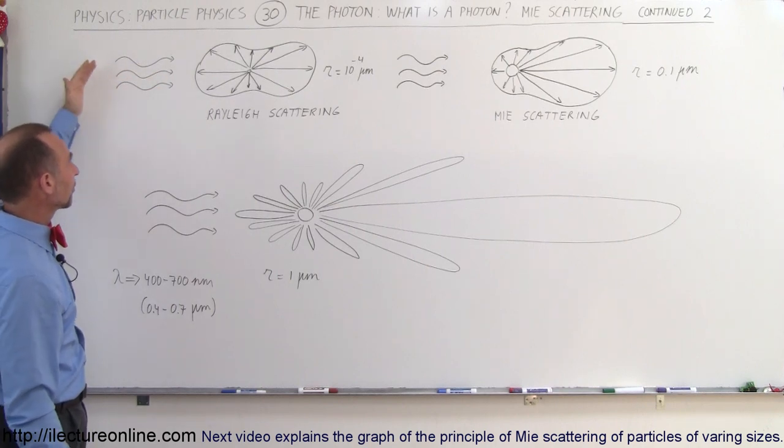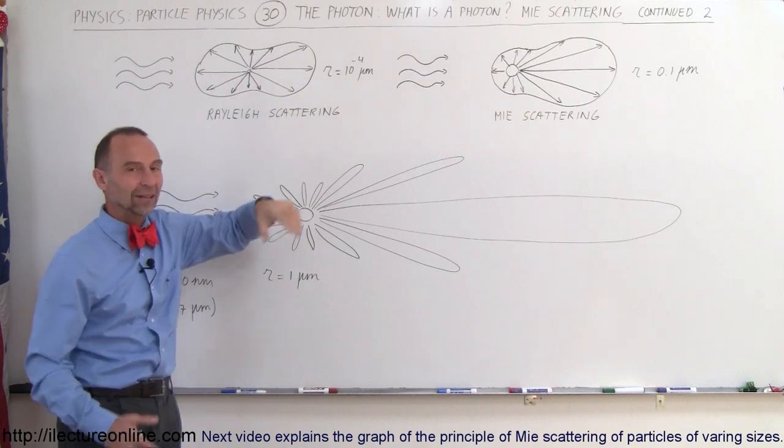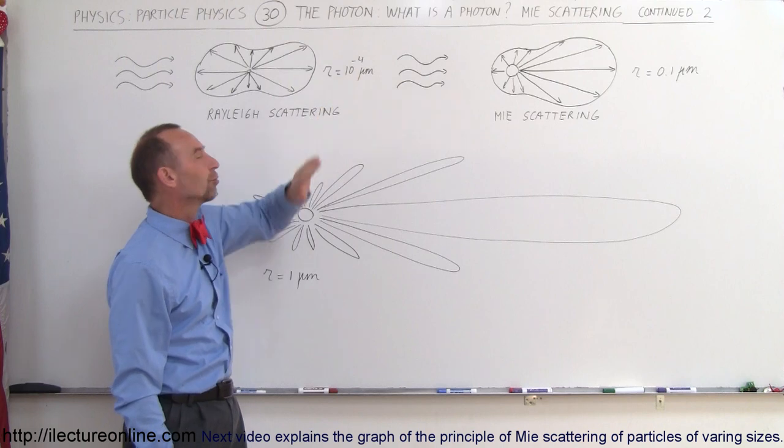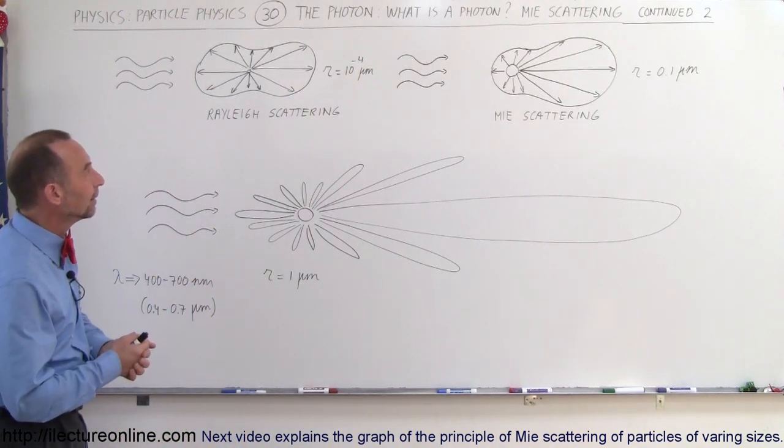These are the photons coming from the sun entering the atmosphere and scattering out of the very small particles like atoms and molecules in the atmosphere. The radius of those are about 10 to the minus 4 micrometers, which would put it at about 100 nanometers.